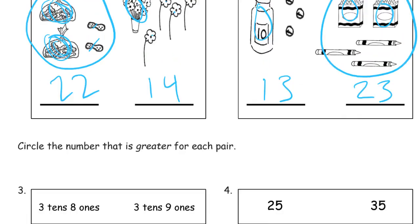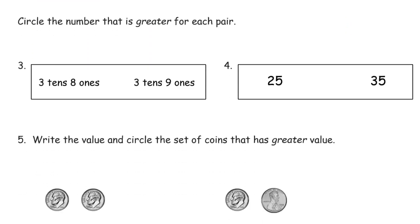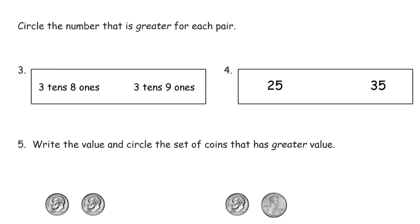Circle the number that is greater for each pair. This can help if you're looking at numbers in other forms. It can really help to either draw a place value box or draw a picture or just write down the number in regular form. So I'm going to draw a place value box for these. And this is going to be 10s and that's 1s, T for 10s and O for 1s.